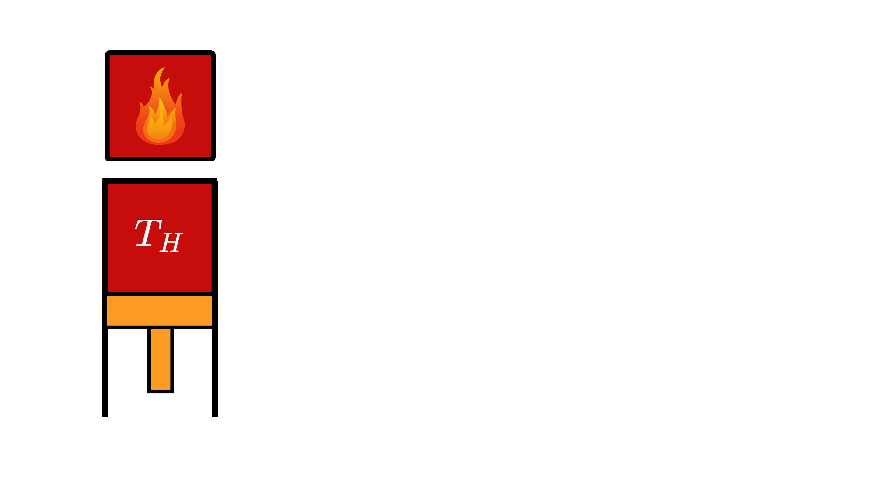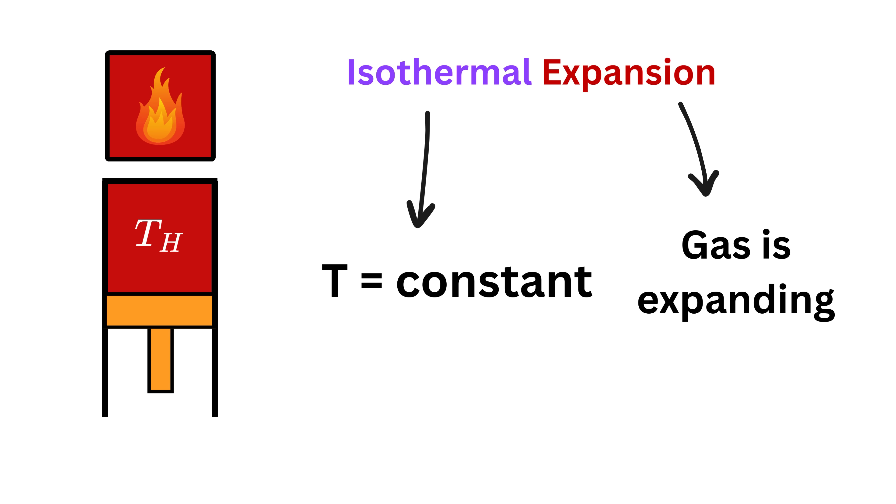We label the temperature of the gas as T_h. The Carnot cycle is made of four steps. Let's go one by one. The first step is called an isothermal expansion.